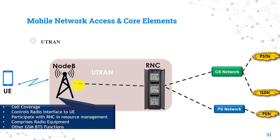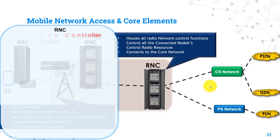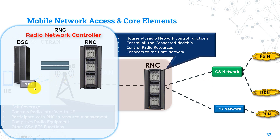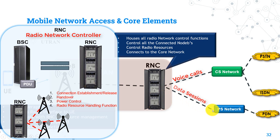The other node in the UTRAN is the RNC, Radio Network Controller. It is equivalent to the GSM BSC but with enhancements — unlike the BSC, the RNC does not need a separate PCU unit as it has that capability built in. RNC houses radio network control functions such as connection establishment and release, handover, power control, and radio resource handling. It connects all Node Bs together, controls radio resources in cooperation with Node B, and is the direct interface with the core networks — whether CS for voice calls or PS for data sessions.